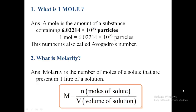First question: what is one mole? A mole is the amount of a substance containing 6.02214 × 10²³ particles. That is, one mole is equal to 6.02214 × 10²³ particles, and this particular number is also known as Avogadro's number.